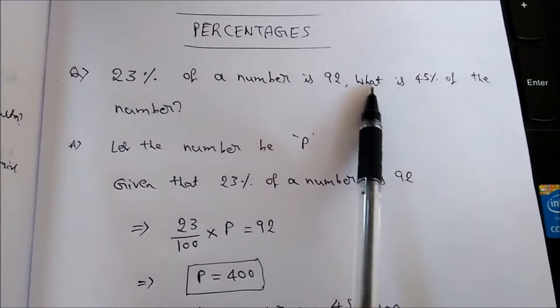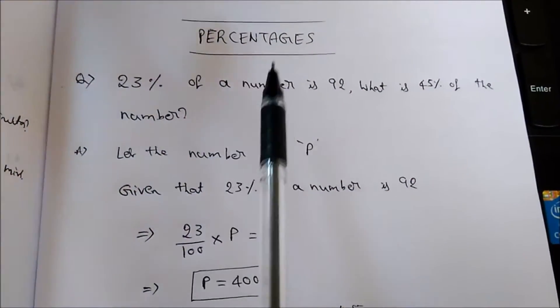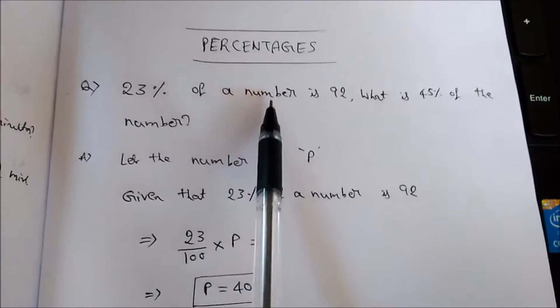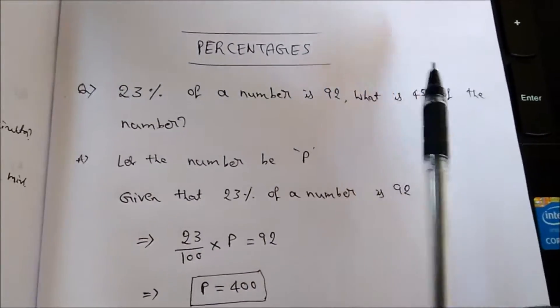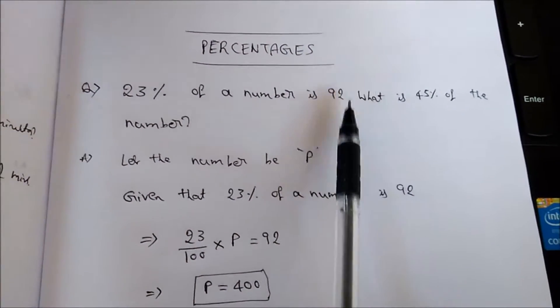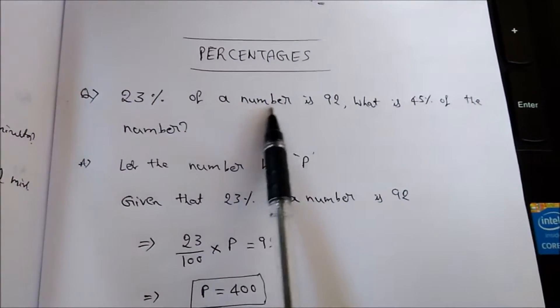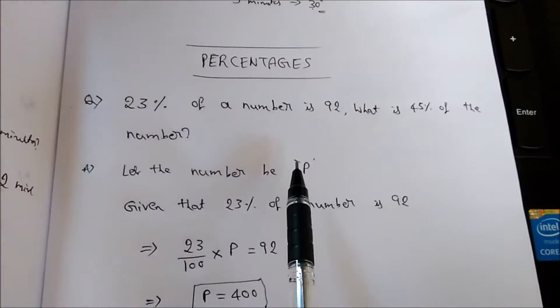Number is 92, what is the 45% of the number. They haven't mentioned what is the number, we need to find out the number and for that we need to find out what is the 45%. Okay, now let us assume that the required number is P. Let the required number be P.